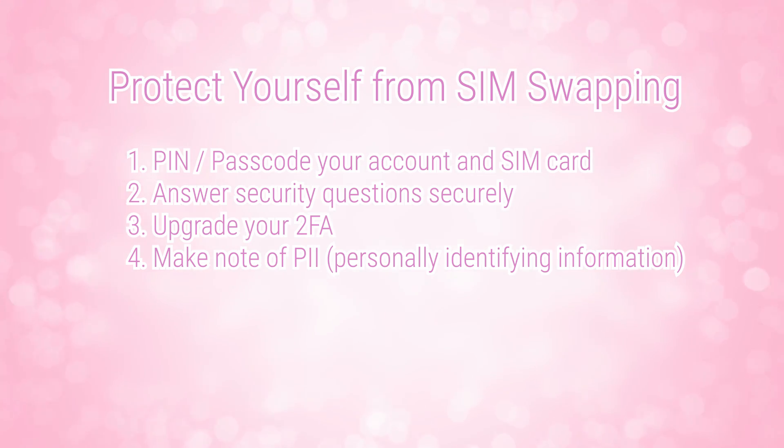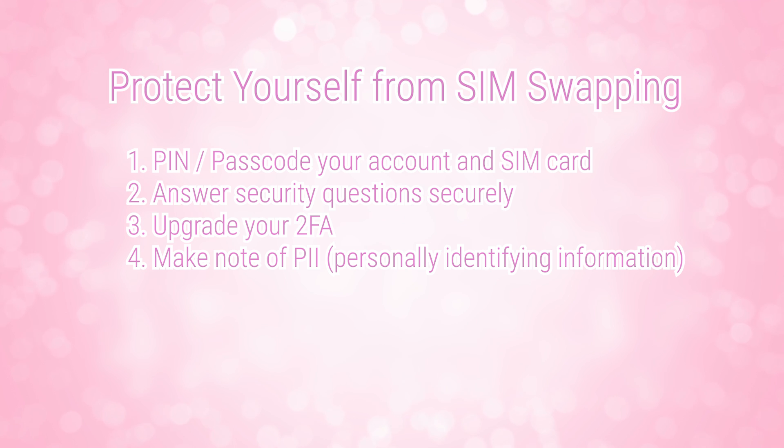For my fourth tip, I would definitely recommend either making note offline or mentally of all of the data that a company might use to authenticate you — or in this case, that an attacker could use to authenticate themselves as you with the company. That could include your date of birth, any credit cards associated with the account, a physical or mailing address used on the company's account, your name, your screen name, or email addresses associated with that account, security answers, a PIN code — basically any of that information that they might use against you.